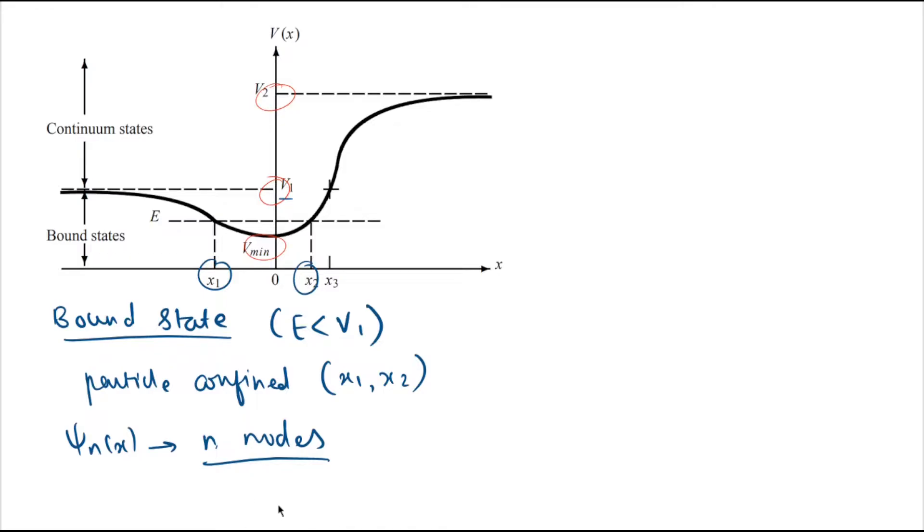Now let's discuss the unbound state. For this given curve, unbound states occur for two cases. For case one, E is less than V2 and greater than V1.